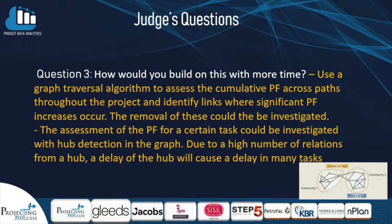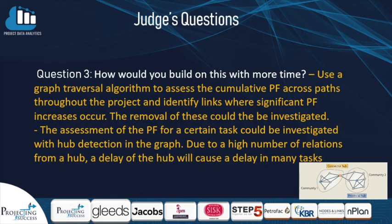If we had more time we'd like to explore the problem from the point of view of the graph that represents the schedule. One way we could do this is use a graph traversal algorithm to assess the cumulative priority factor across different paths throughout the project, and by identifying a high cumulative priority factor you can work out which links could possibly be removed to reduce the project time. Another way we could investigate the graph is by identifying hubs using a hub detection algorithm. A hub is a node that has a high number of links into and out of it, so by decreasing the number of links you're decreasing the risk that a delay in this hub will cause delay to future tasks.